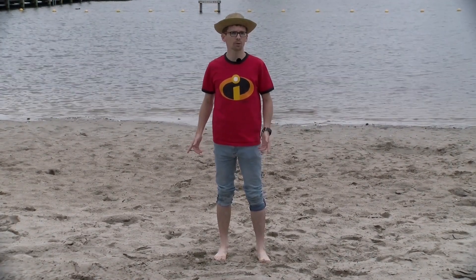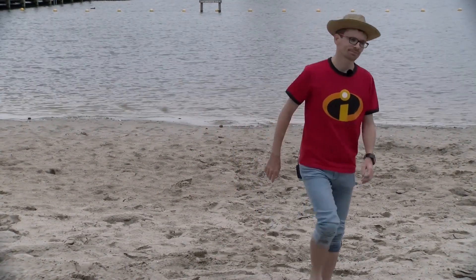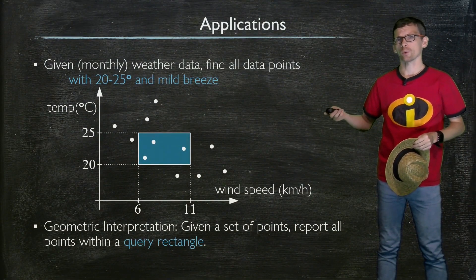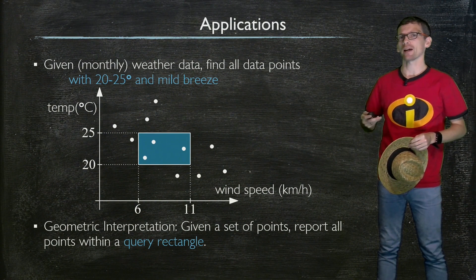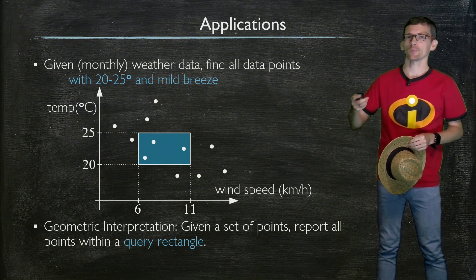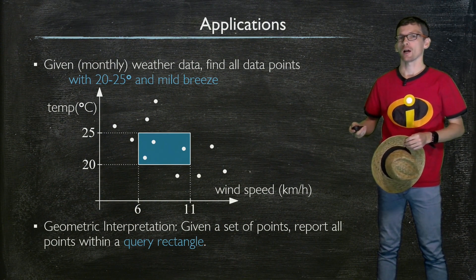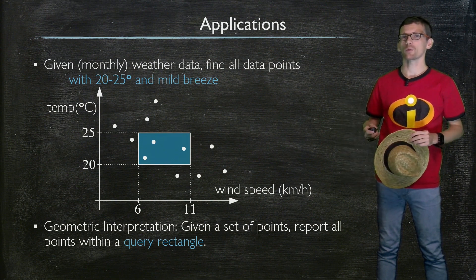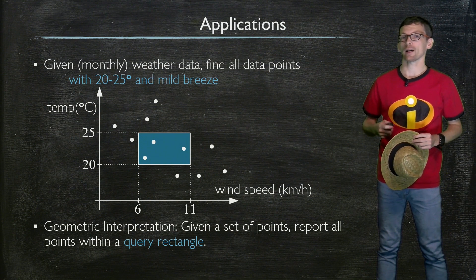Let's have a closer look at those queries. Here every point corresponds to a possible holiday location, and for every point we have a temperature value and a wind speed. Now if I query with a temperature range and a wind speed range, what I get is a query rectangle, and what I would like to have is all the points within that query rectangle.